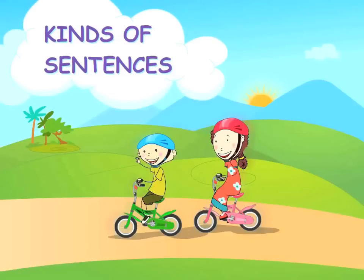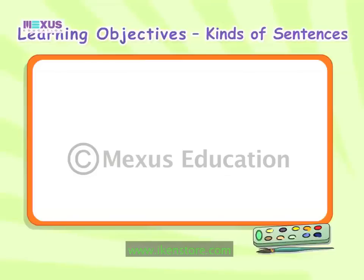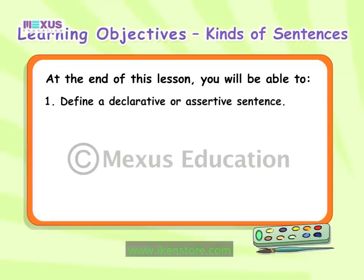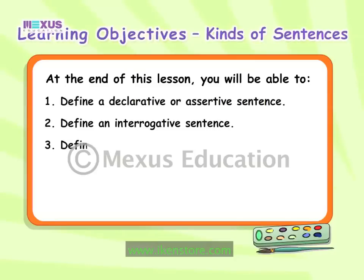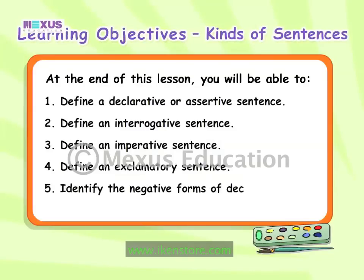Kinds of Sentences. At the end of this lesson, you will be able to define a declarative or assertive sentence, define an interrogative sentence, define an exclamatory sentence, and identify the negative forms of declarative, interrogative and imperative sentences.